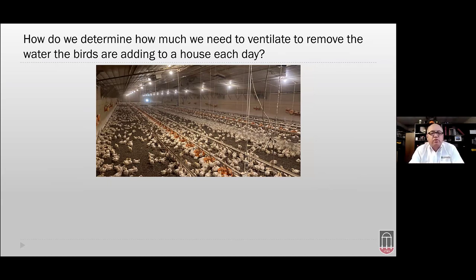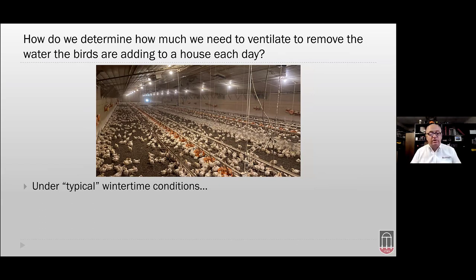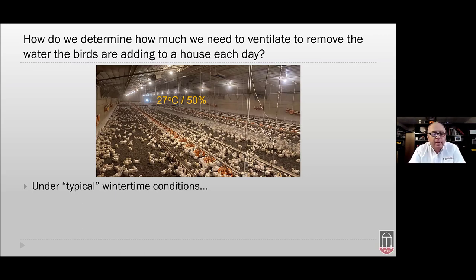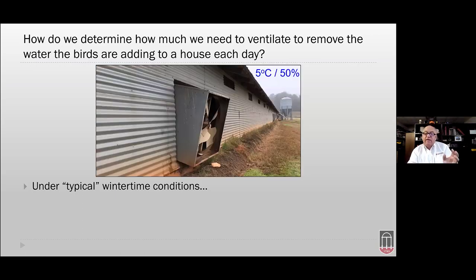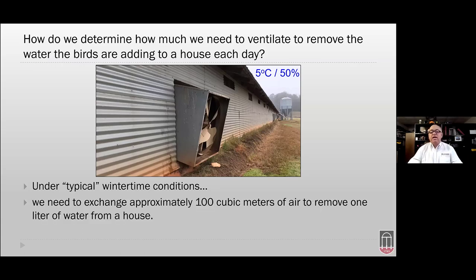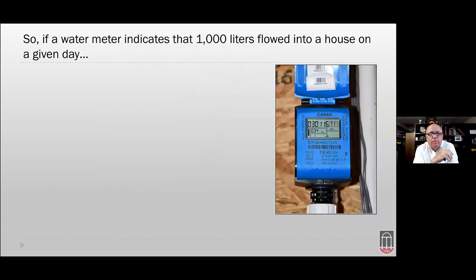How do we determine how much we need to ventilate to remove the water the birds add each day? Under typical wintertime conditions — and that's always the dangerous one — with 27°C inside at 50% humidity and about 5°C outside at 50% humidity as average over the course of the flock, we need to exchange approximately 100 cubic meters of air to remove one liter of water from a house.